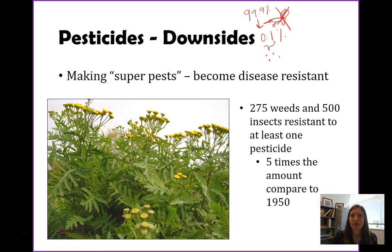The cycle keeps repeating: organisms resistant to one pesticide breed, the best ones reproduce, we spray another pesticide, it kills most of them, some survive, those breed and reproduce. This is a pretty much never-ending cycle that continues until we can't think of another pesticide to use.